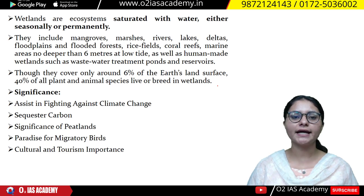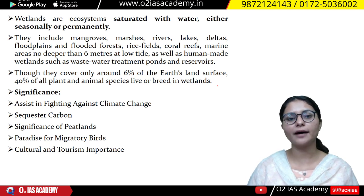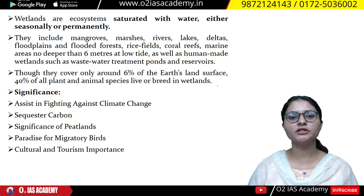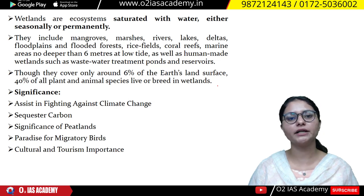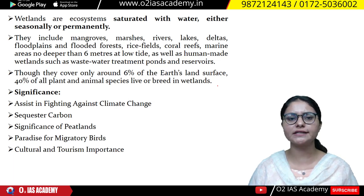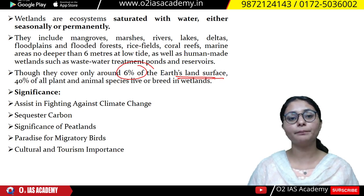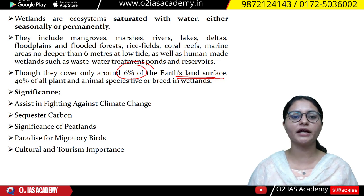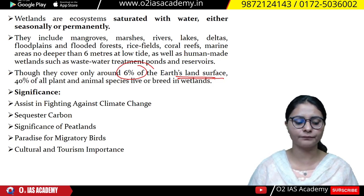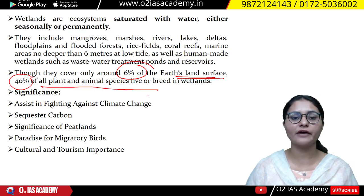From the main exam point of view, the Ramsar sites cover wetland ecosystems, meaning that in those areas there is significant water and waterlogged soil. We also call them wetlands or peatlands, which are very significant. Wetlands cover about 6% of the Earth's area, and if I talk about biodiversity, almost 40% of plant and animal species are found in wetlands. This is why it is very important to protect these wetlands.